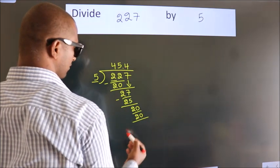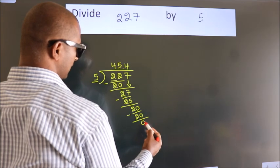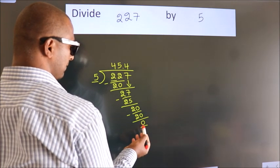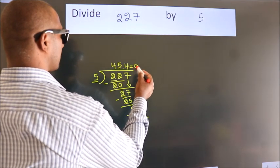Now we subtract. We get 0. We got remainder 0, so this is our quotient.